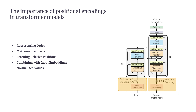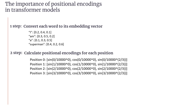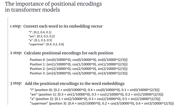Let's consider a simple example of how positional encoding is applied. Suppose we have the sentence 'I am a Superman.' First, convert each word to its embedding vector. Second, calculate positional encodings for each position using the formula. Third, add the positional encodings to the word embeddings. The resulting vectors now contain both semantic information from the word embeddings and positional information from the encodings, allowing the transformer model to differentiate between the same word appearing in different positions and to understand the sequential nature of the input.